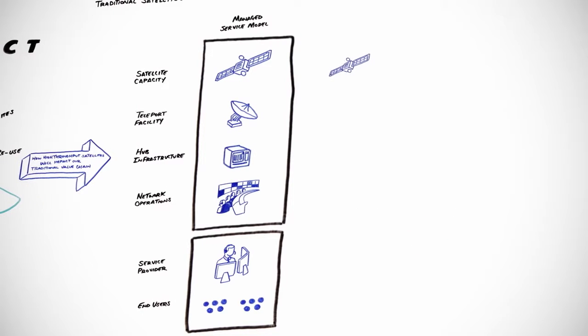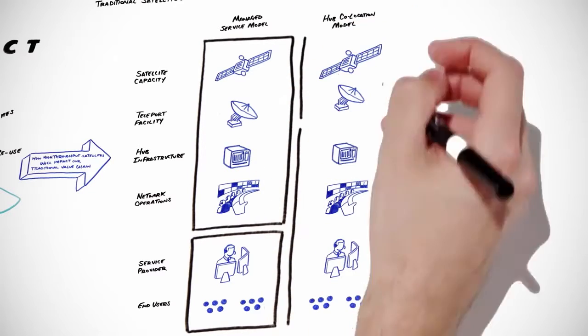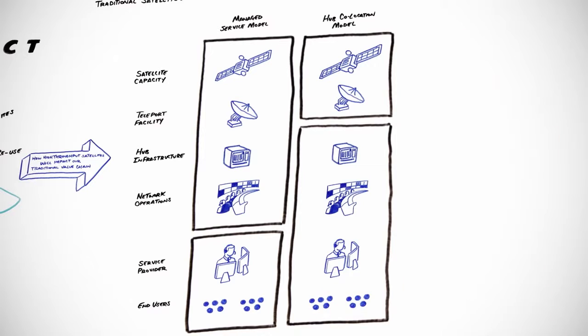Now we're seeing more traditional business models being adopted by high throughput satellite operators. Some have chosen a hub co-location model. Here, the satellite operator owns and operates the satellite and teleport. A service provider then locates its hub infrastructure in the operator's teleport, manages network operations, and provides service directly to end users.